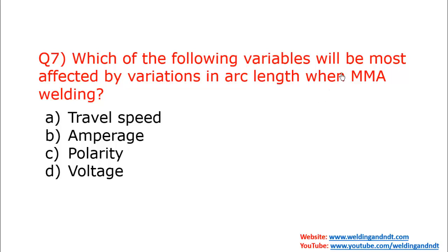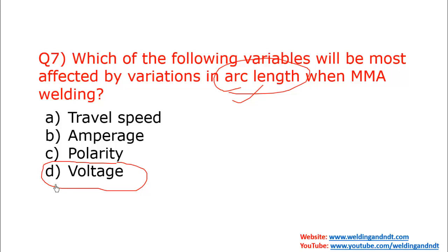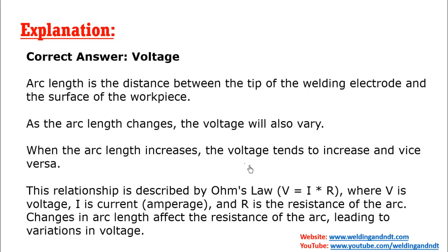Question number seven: which variable is most affected by variations in arc length when MMA welding? In MMA or SMAW, when you vary the arc length, the voltage will vary most significantly. Option D — voltage — is the correct answer. If you increase the arc length, voltage tends to increase, and vice versa. This relationship is given by Ohm's law: V = I × R. The arc length affects resistance, and when resistance changes, voltage changes accordingly.